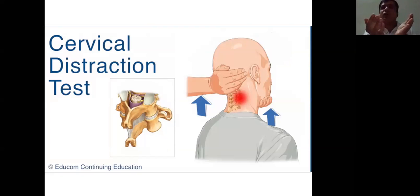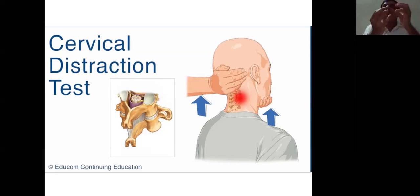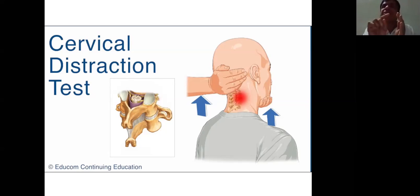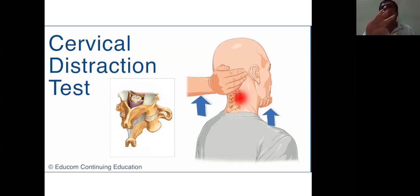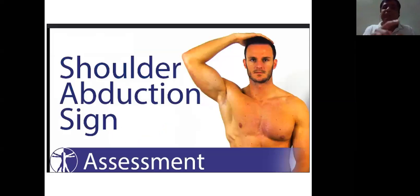In the cervical distraction test, hold the chin and occiput of the patient and give a gentle upward thrust — don't actually lift. This opens up the foramen and reduces the pain. This is the basis of cervical traction in cervical radiculopathy, though I don't personally prefer it. The second relieving sign is the shoulder abduction sign, also called the Davidson sign.